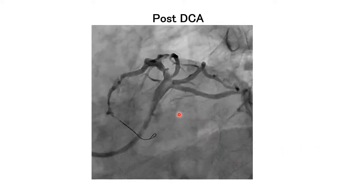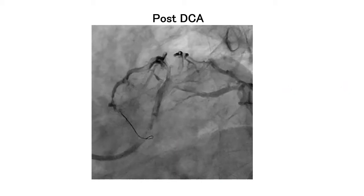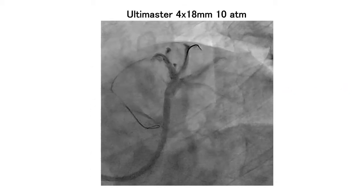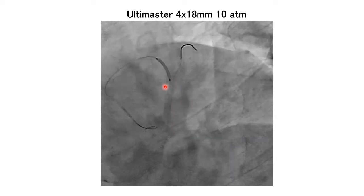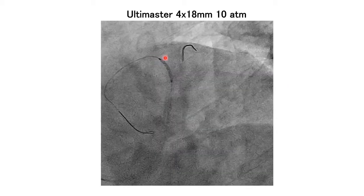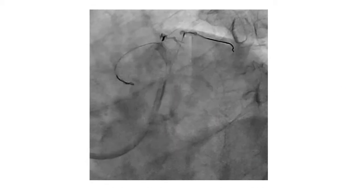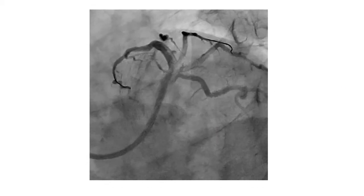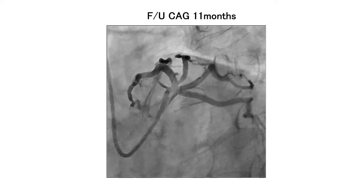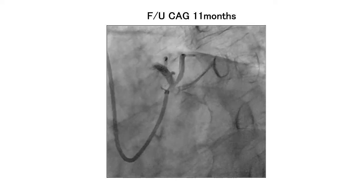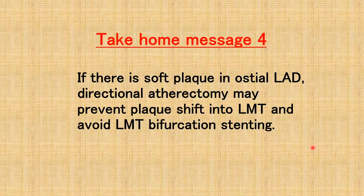The ablation effect looks satisfactory. An Ultimaster 4.0x18 stent was implanted from the orifice of LAD to the distal LAD. Final angiogram shows a beautiful result. Follow-up angiogram shows no restenosis. If there is soft plaque in the ostial LAD, directional atherectomy may prevent plaque shift into LMT and avoid LMT bifurcation stenting.